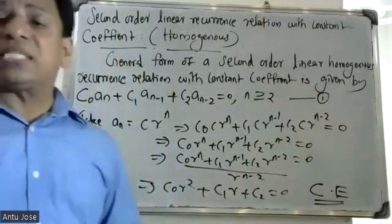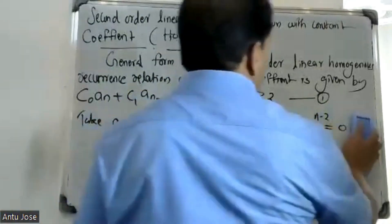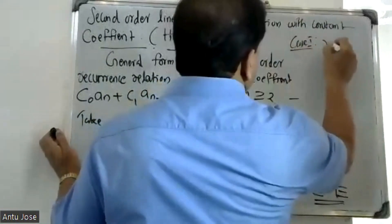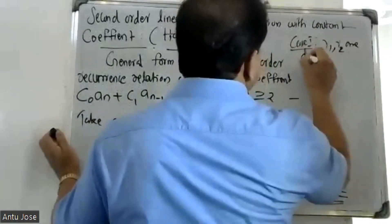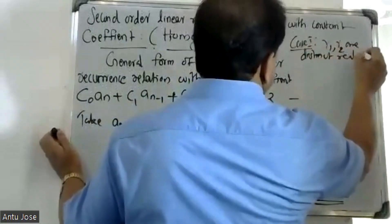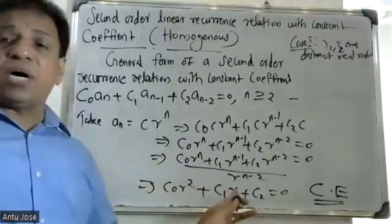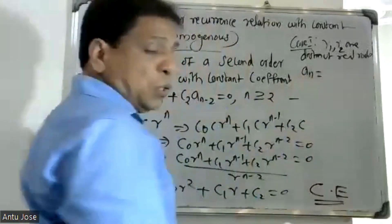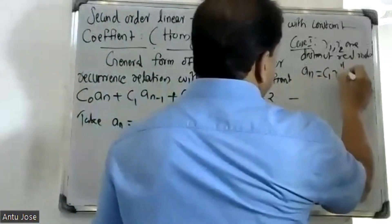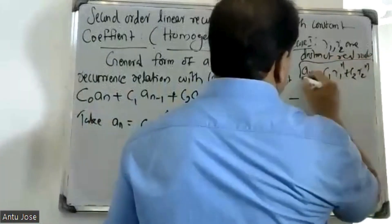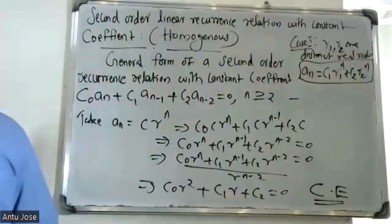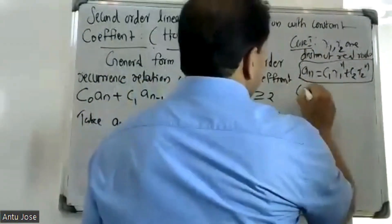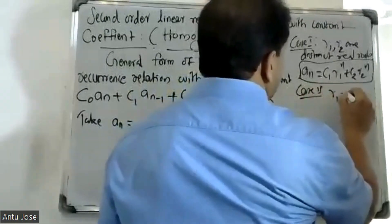Case 1: r₁ and r₂ are distinct real roots. If r₁ and r₂ are distinct real roots, the general solution formula is: aₙ = c₁·r₁^n + c₂·r₂^n.